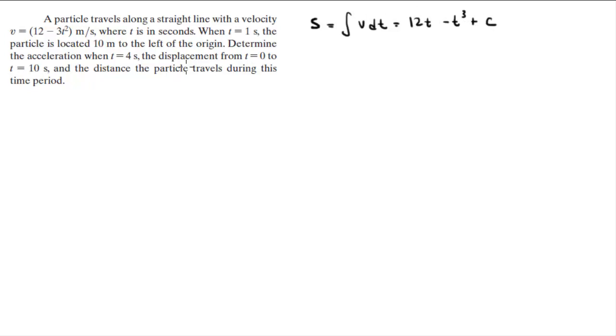However, we know that when t is equal to 1 second, the position is 10 meters. So at t equals 1, s equals 10, which means that if s equals 12t minus t cubed plus C, when s is 10, t is 1 minus 1 cubed plus C. And when you solve for C, you get that it is equal to negative 21.